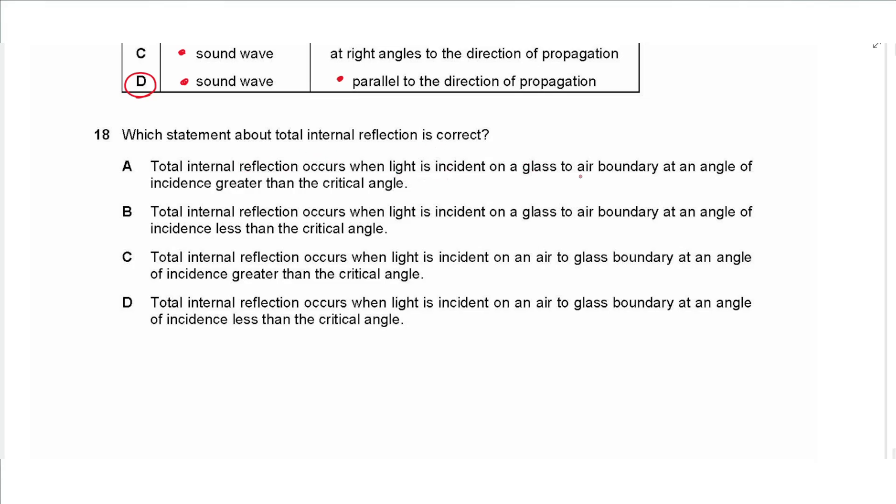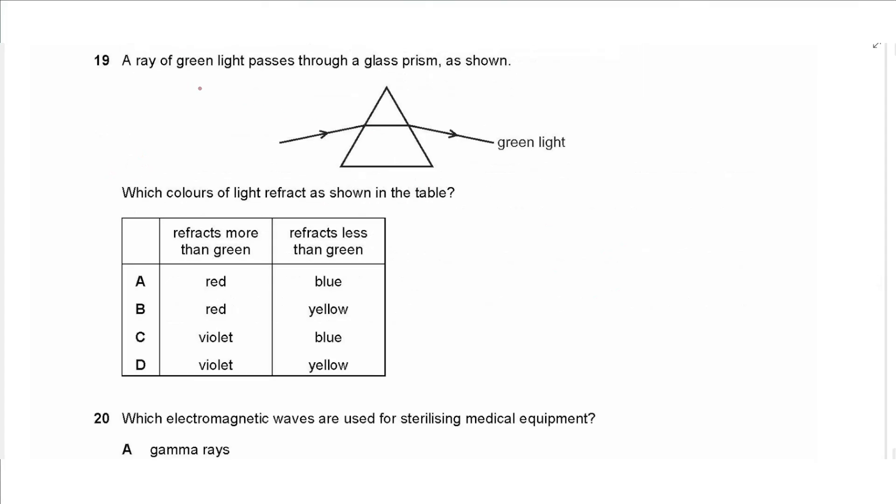Question 18 says which statement about the total internal reflection is correct. Total internal reflection occurs when light is incident on a glass to air boundary or air to glass boundary, it's not air to glass, it must be from a denser medium to a less dense medium at an angle of incidence greater than the critical, yes, so we choose A.